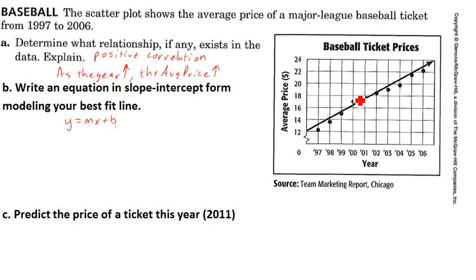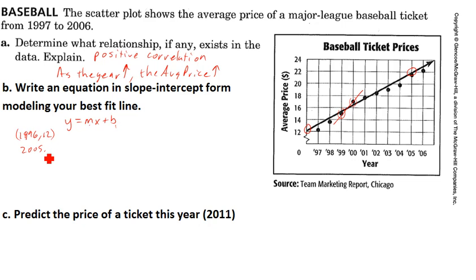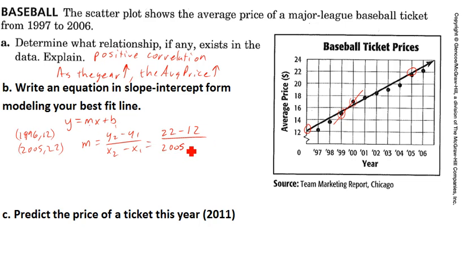If I choose points that are close together, even if they're pretty close to the line, I'm going to get a slope that's very different from the one of my best fit line. So I'm going to pick points that are very easy to read off the graph. That line is passing almost exactly through the crosshairs there, so the two points I'm going to use are (1996, 12) and (2005, 22). Using the slope formula — y2 minus y1 over x2 minus x1 — that gives us 22 minus 12 over 2005 minus 1996, which is 10 over 9. So my slope is 10/9.